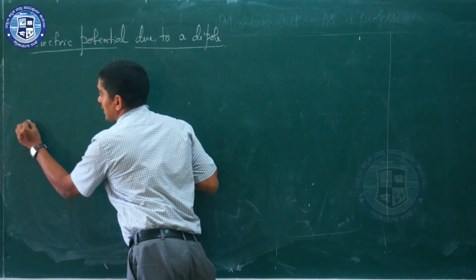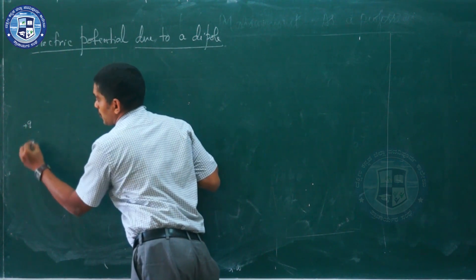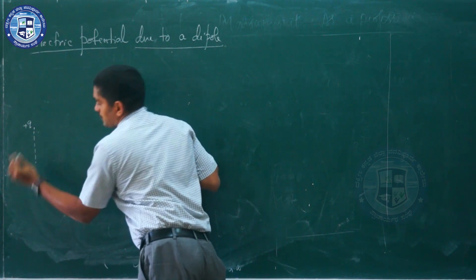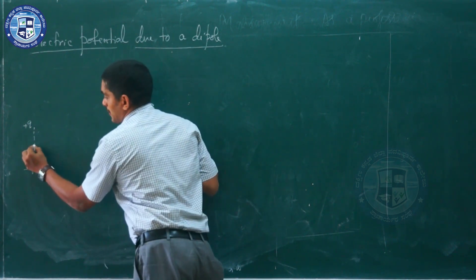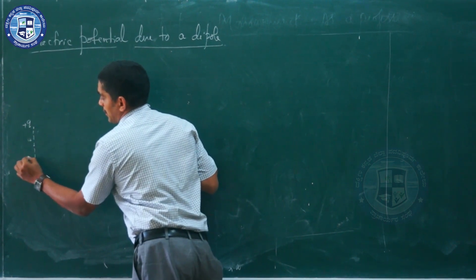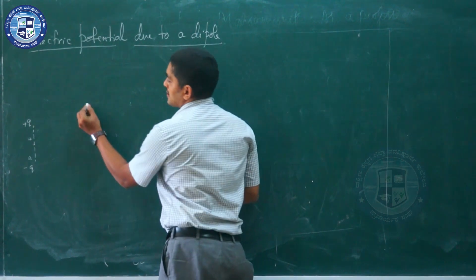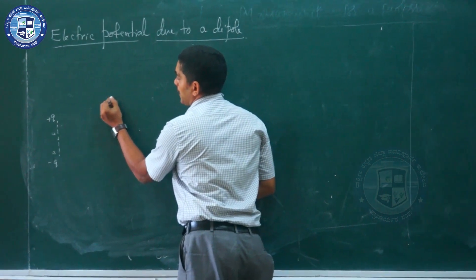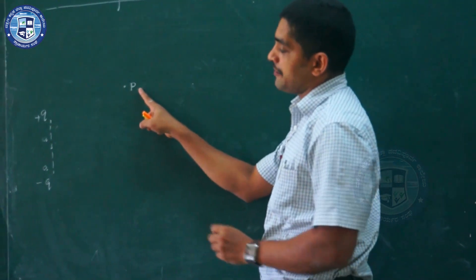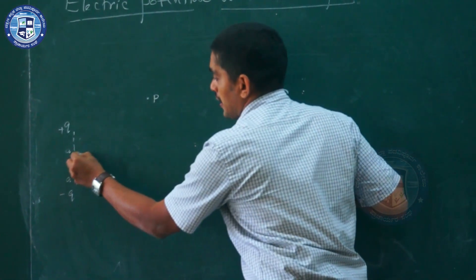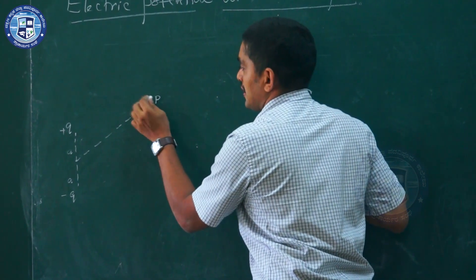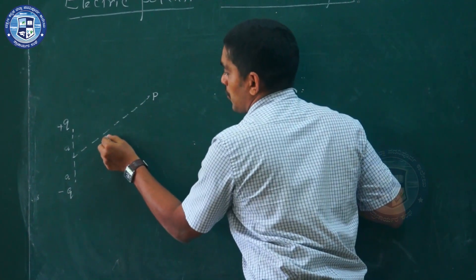Let us consider an arrangement of charges — the dipole — say one charge plus Q here and minus Q here. Let us mark this as the midpoint of the dipole axis, so this will be A and this will be A. Now let us consider a point, say point P, where we have to find the potential. We want to get an expression for the potential at P, taking the distance from the point to the center of the dipole as R.